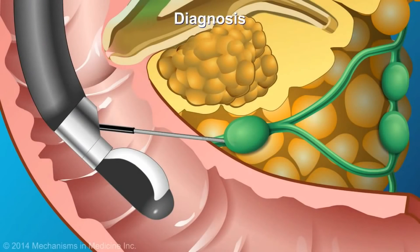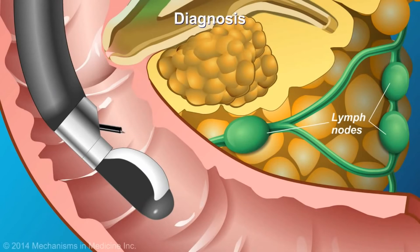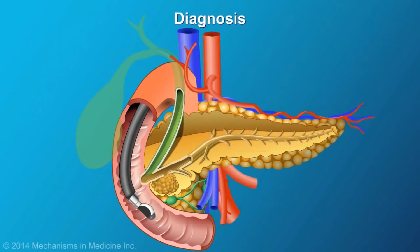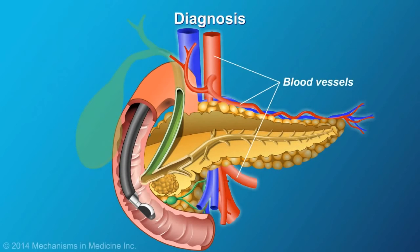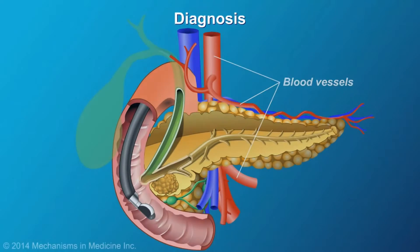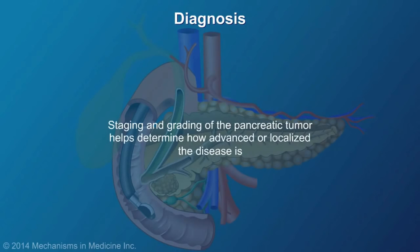On occasion, peripancreatic lymph nodes are also sampled to determine if the tumor has spread. The vessels around the pancreas are also closely studied to rule out any type of tumor involvement within the peripancreatic arteries and veins. This is called staging and grading of the pancreatic tumor, and this helps determine how advanced or localized the disease is.